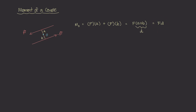Let's quickly do an example to really understand this. Imagine you have a force vector going this way — 2 newtons — and the same vector going in the opposite direction — negative 2 newtons. The distance between these two forces is 3 meters, and our objective is to find the moment caused by this couple. According to the formula, it's just the magnitude of F times the distance between them. The magnitude of F is 2 newtons, and the distance is 3 meters, so the moment is 6 newton-meters.